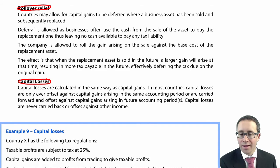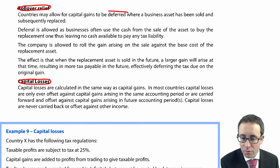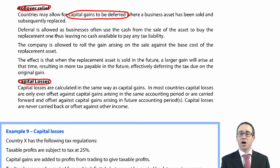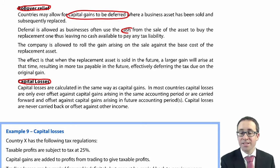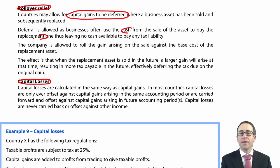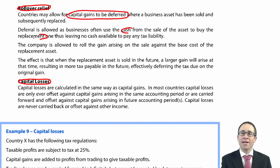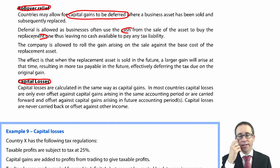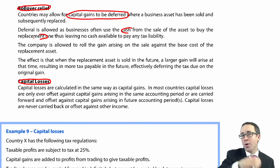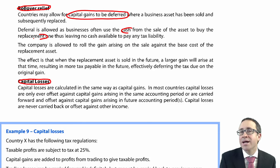Rollover relief is where capital gains are deferred. The way in which you defer that capital gain is by taking the cash from the sale of the asset to buy a replacement one. So you haven't just sold the old asset to get cash and pay a dividend — you've taken the proceeds and reinvested them. You're allowed to claim the relief because if you've used the proceeds to buy a new asset, then how are you going to pay the tax?